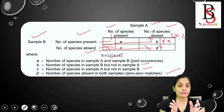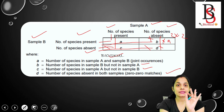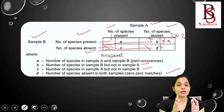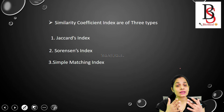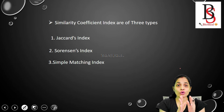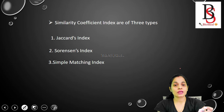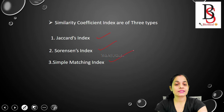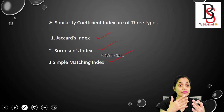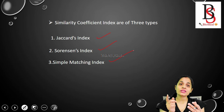To calculate the similarity coefficient index, you plot a two-by-two table and identify what a, b, c, d mean. There are more than two dozen similarity coefficient indexes, but broadly three are commonly used: Jaccard's index, Sorenson's index, and the Simple Matching index. In upcoming sessions, I will make a video on each of these.